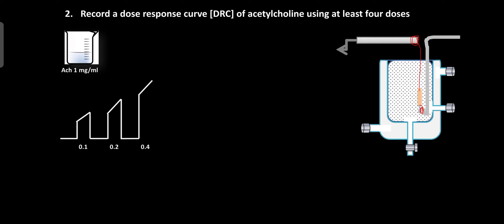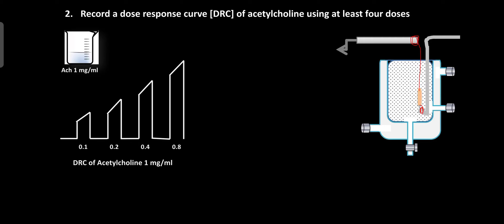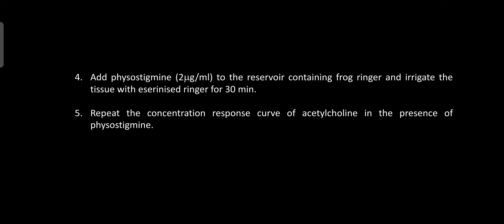After 90 seconds, stop the drum and wash the tissues 2 to 3 times. Then after the washing period, record the baseline, and add 1.5 ml of physostigmine solution for 30 minutes. After 30 minutes, repeat the concentration-response curve of acetylcholine in the same concentrations previously used, now in the presence of physostigmine.